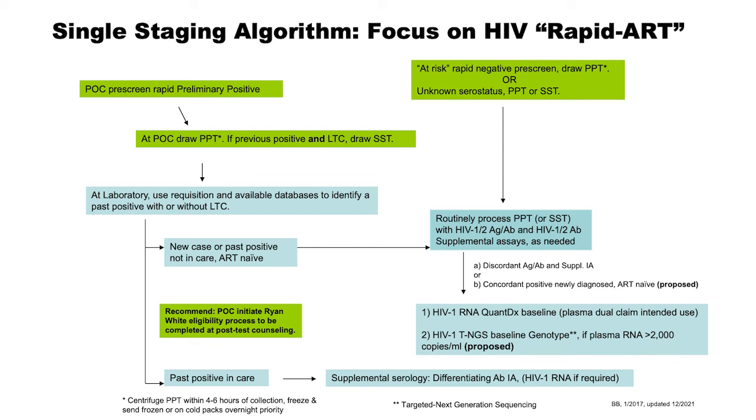The other part of our proposal is to incorporate our target next-generation sequencing genotyping. This does require plasma — another reason we strongly push for plasma — so we can do that genotype for both clinical and surveillance purposes. If the plasma RNA result is greater than 2,000 copies, we would reflex that to our next-generation sequencing.